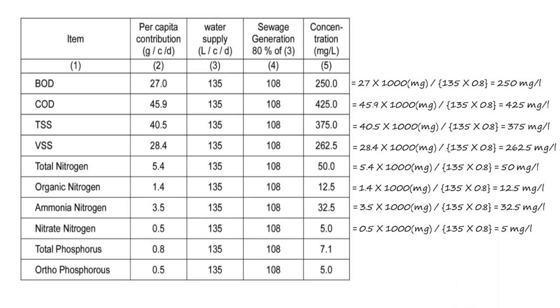For total phosphorus, 0.8 multiplied by 1000 divided by 135 multiplied by 0.8, that is 7.1 mg per litre. For orthophosphorus, 0.5 multiplied by 1000 divided by 135 multiplied by 0.8, that is 5 mg per litre.